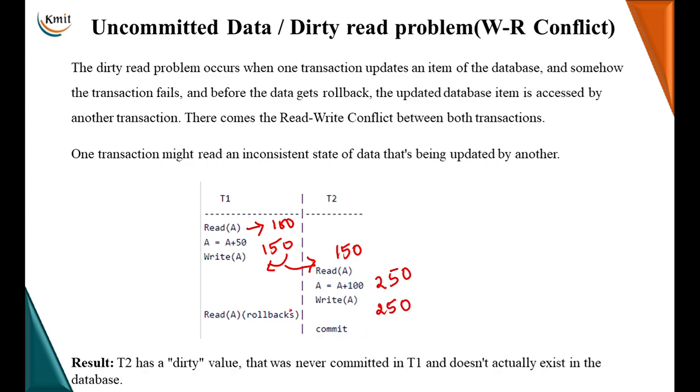Meanwhile, what happens is this rolls back. Meanwhile, the transaction T1 rolls back. When transaction T1 rolls back, A's value will be normal back at 100 as per that. But what we are doing here is a commit. Now, T2 has a dirty value that was never committed in T1 and doesn't actually exist in the database at all.